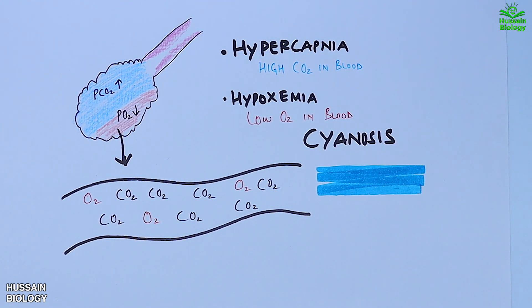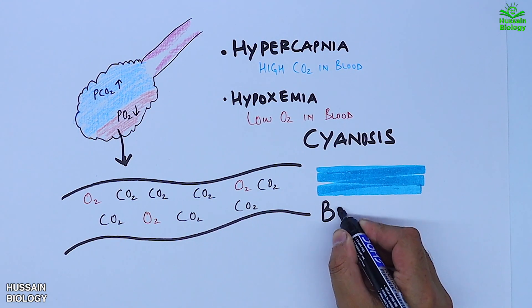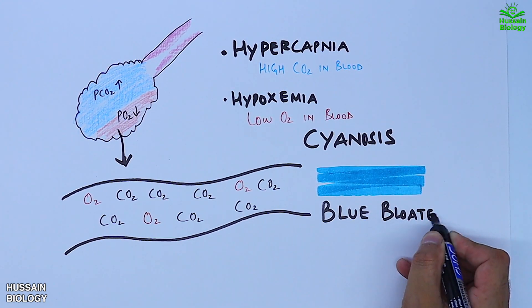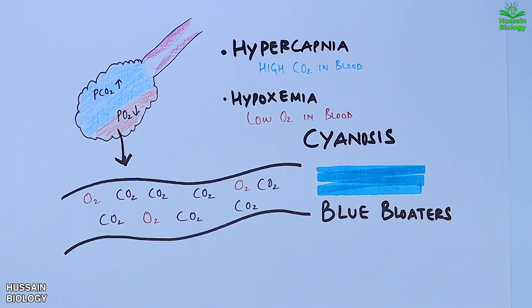This hypercapnia and cyanosis is why chronic bronchitis is sometimes termed 'blue bloaters.' This concludes the overview of COPD and chronic bronchitis. Emphysema will be discussed in the upcoming video.